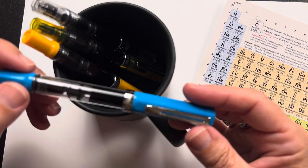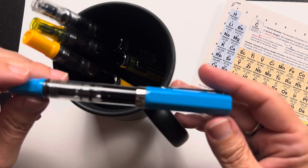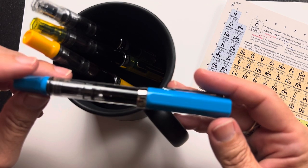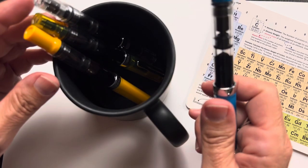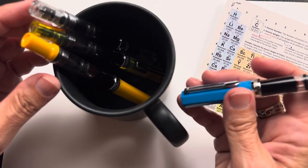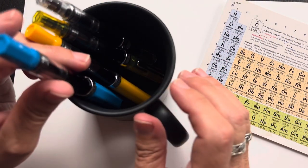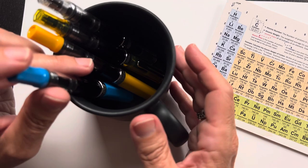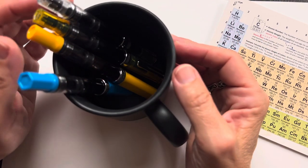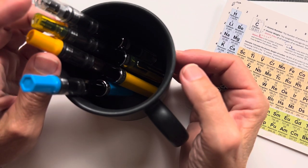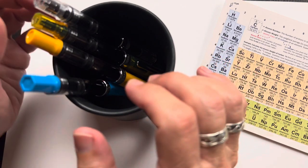We're going to be talking about net ionic equations, but all in the context of precipitation reactions. When you first begin learning about chemistry, one of the things you learn is about the different types of chemical reactions that there are. You learn about acid base chemistry, redox reactions, and precipitation reactions.